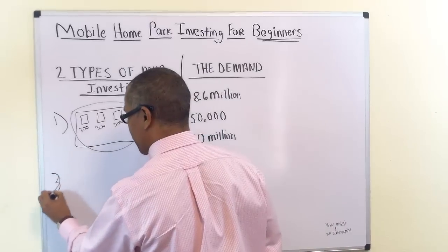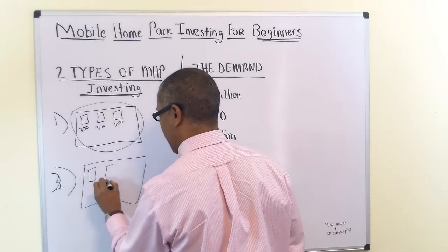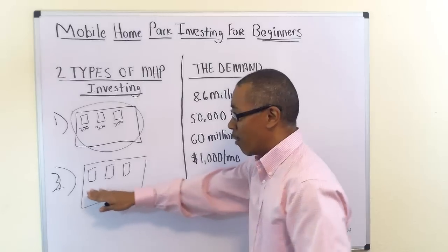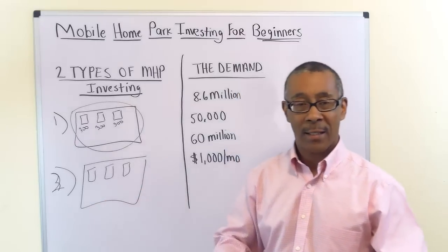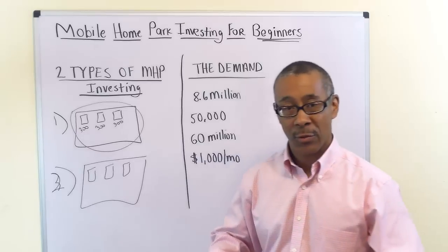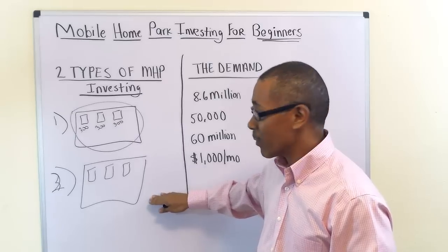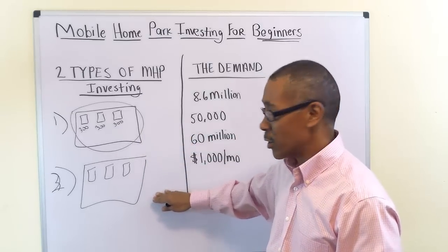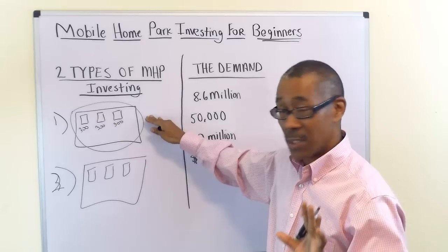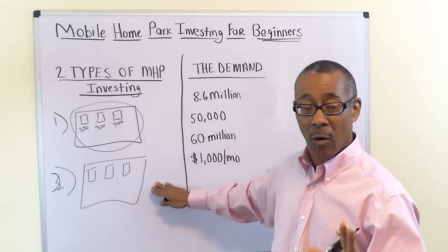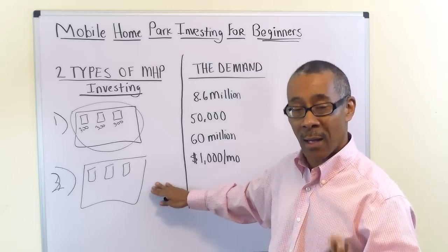The second form of ownership is where you have a mobile home park and the lots, but not only do you own the lots — you also own the homes that are on them. So you're pretty much operating it like an apartment building. We're going to get into why the first case is much better than the second case.